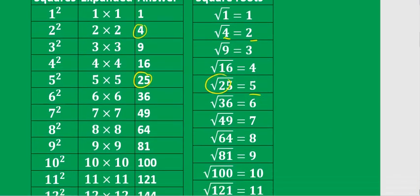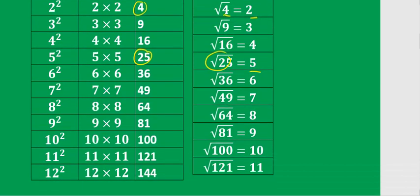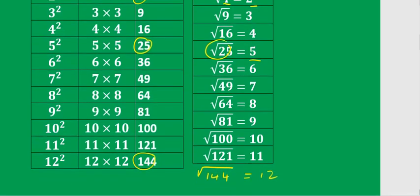We can carry that right to the end: if 12 squared is 144, then the square root of 144 will be 12, because squares and square roots are inverses.